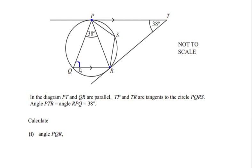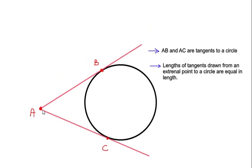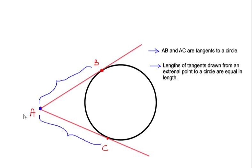To find this angle, let us use a theorem on tangents to the circle. Here A is an external point outside the circle and it makes two tangents AB and AC with the circle. According to the theorem, the lengths of tangents drawn from an external point are equal — so if AB is four centimeters, then AC is also four centimeters.